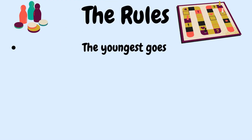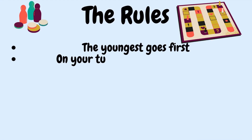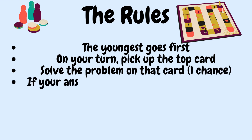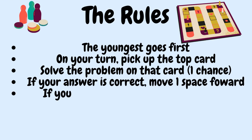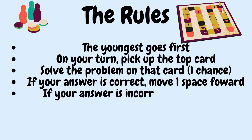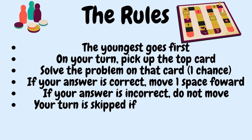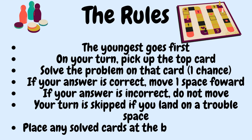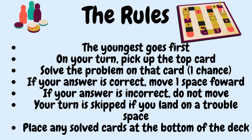Here are the rules for my game. The youngest goes first. On your turn, pick up the top card. You have one chance to solve the problem. If your answer is correct, you move one space forward. If your answer is incorrect, you do not move. If you land on a trouble space, you lose your turn. And put any solved cards in the bottom of the deck. Please be mindful that these are only suggested — you do not have to use these rules for your board game.